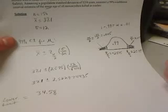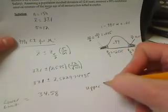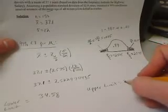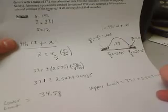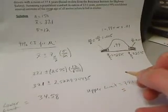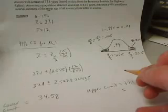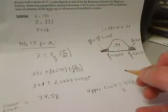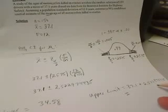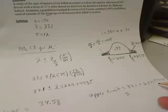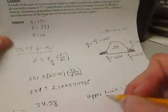We can get the upper limit by adding, taking 37.1 plus that 2.522974435. When we do that, 37.1 plus 2.522974435, we get 39.62. That's the upper limit.